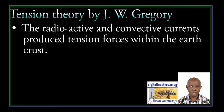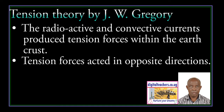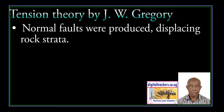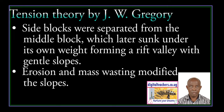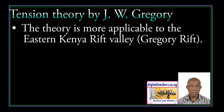The tension theory proposes that radioactive and convective currents produced tension forces within the earth's crust. These tension forces acted in opposite directions. Normal faults were produced, displacing rock strata. Side blocks were separated from the middle block, which later sank under its own weight, forming a Rift Valley with gentle slopes. Erosion and mass wasting modified the slopes. This theory is more applicable to the Eastern Kenya Rift Valley, also known as the Gregory Rift Valley.